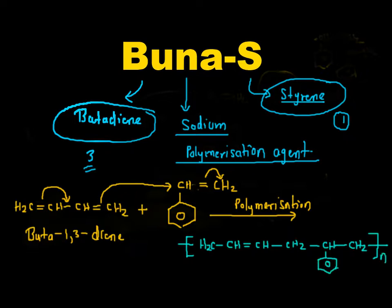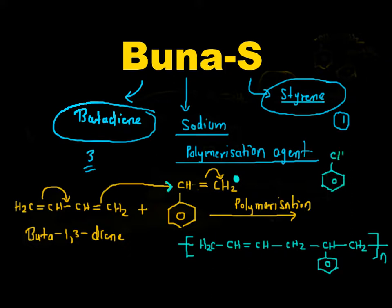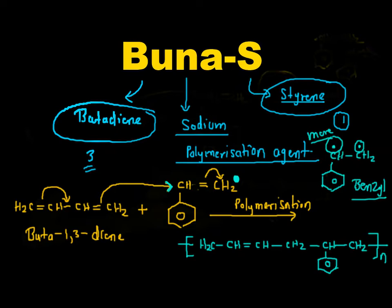This is the repeating unit of Buna-S. Many students have a doubt that bond formation takes place at the benzylic position — why not at the other position, as shown by the dot here. This is because the secondary free radical at the benzylic position is more stable compared to the other. The benzyl free radical is more stable than the benzene-ethyl free radical, due to the +M effect of benzene.